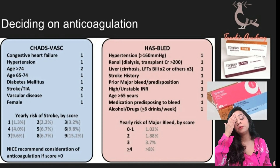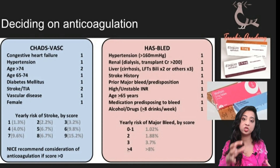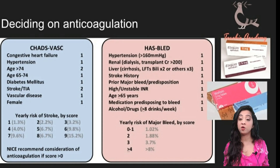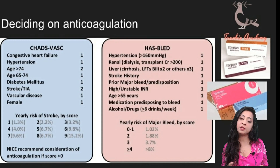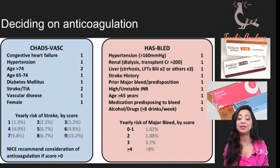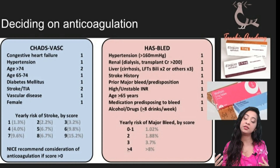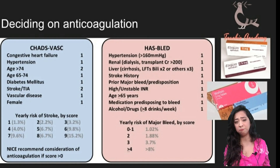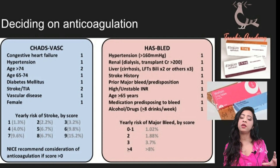Earlier we used to prefer warfarin a lot, but the problem is that patients need regular blood tests at the hospital, which they find annoying. Now there's been a shift to novel oral anticoagulants like apixaban, rivaroxaban, and edoxaban, which patients prefer. One important thing to warn patients about when switching to apixaban or any NOAC is that there is no reversibility. If a patient suffers a bleed due to apixaban — although the risk is much lesser compared to warfarin — with warfarin you can give vitamin K to reverse its effects, whereas with apixaban or rivaroxaban, there's no established reversal agent the way vitamin K is for warfarin.